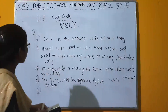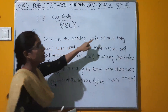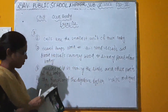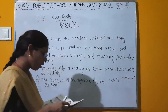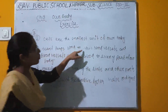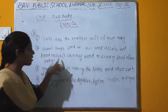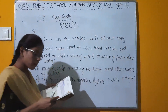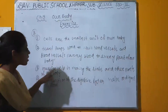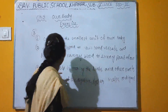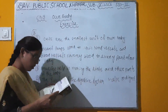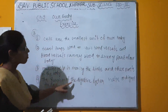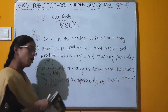Recap of answers: Cells are the smallest unit of our body and the building blocks. The heart pumps blood through the main blood vessels to every part of the body. Muscles help in moving the limbs. The digestive system helps to digest food.